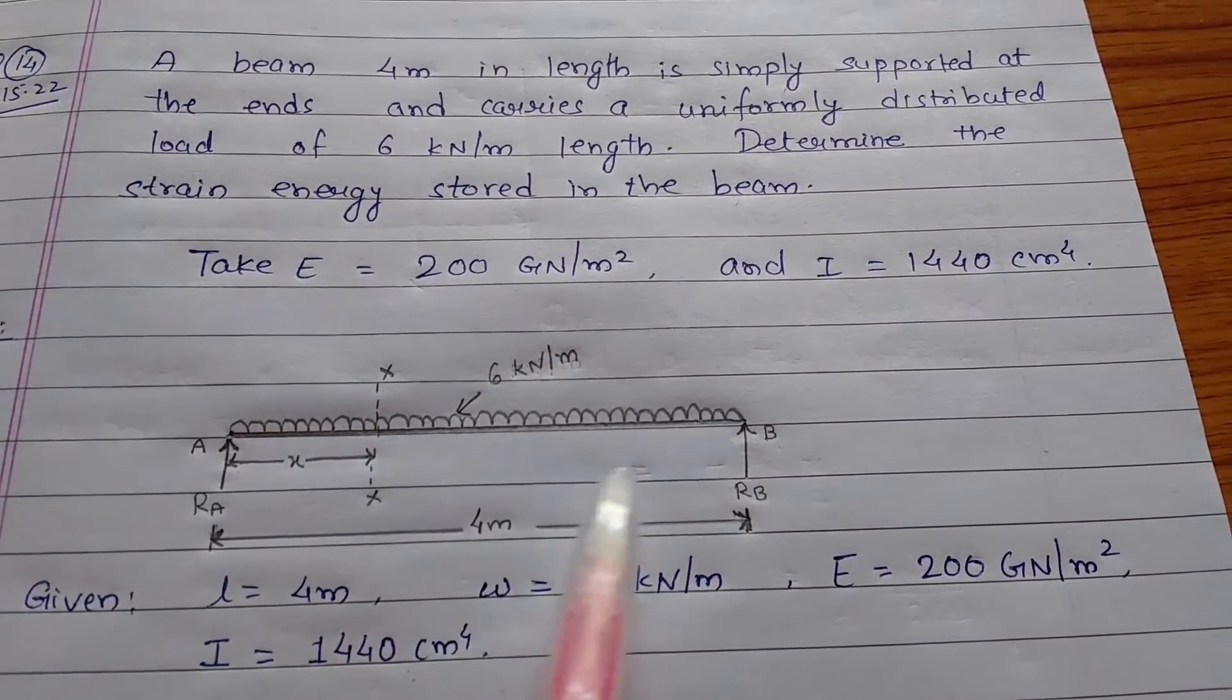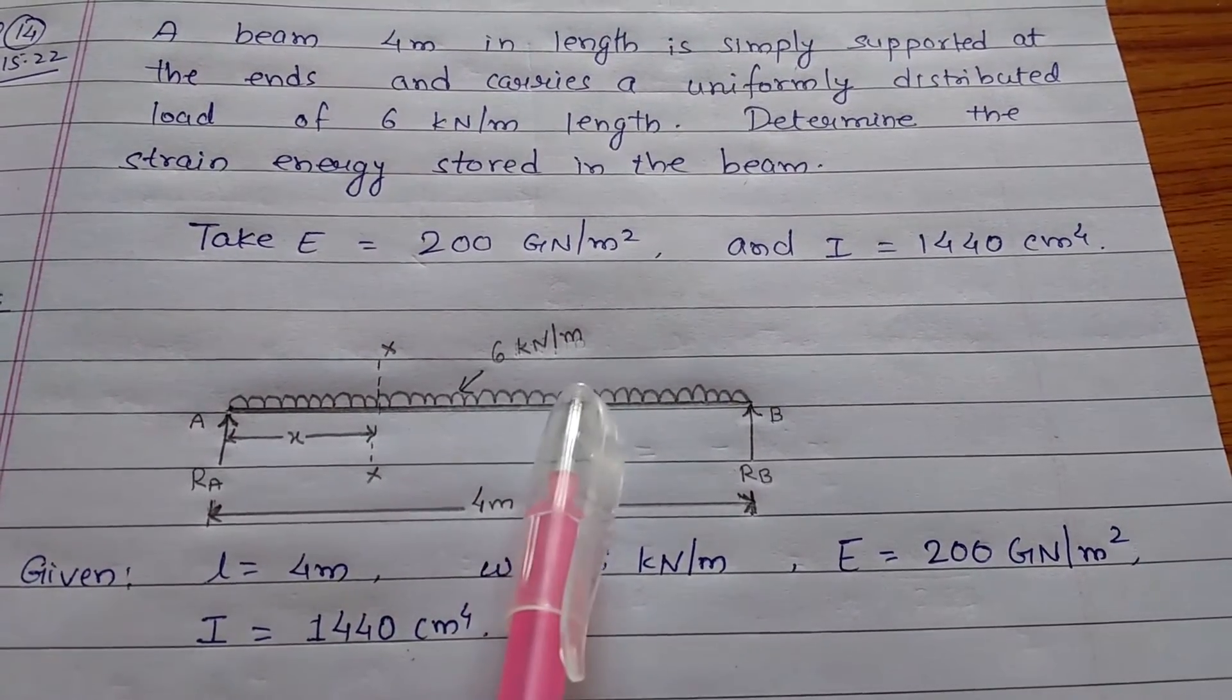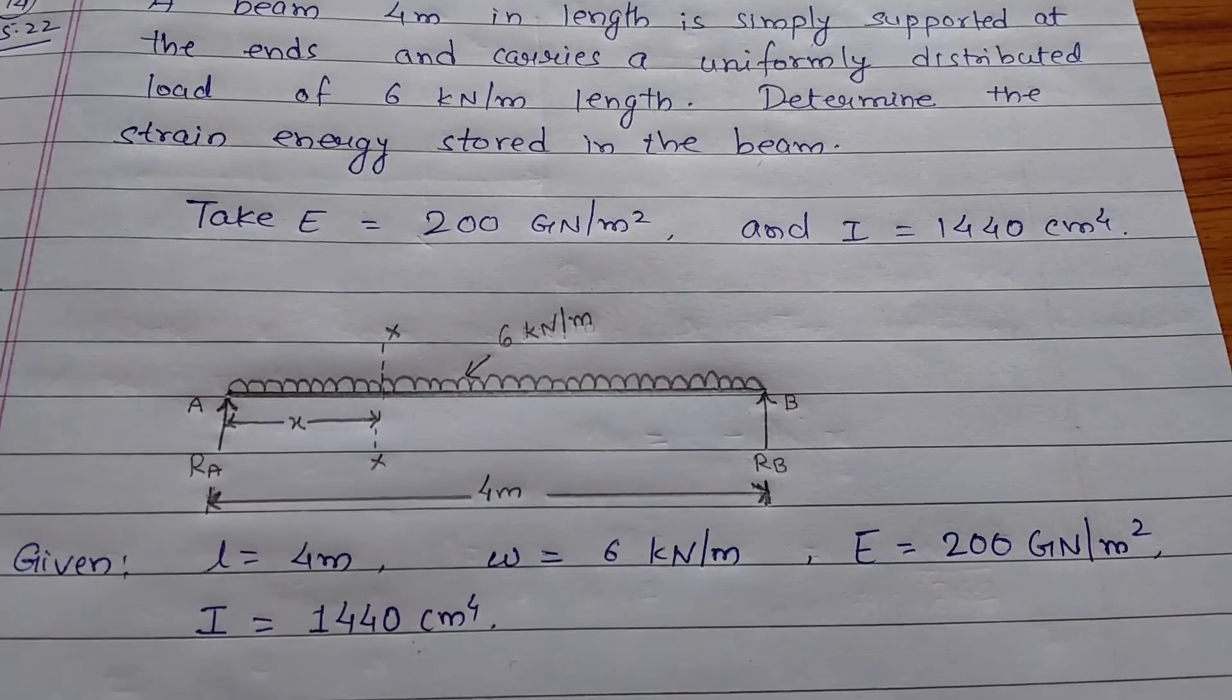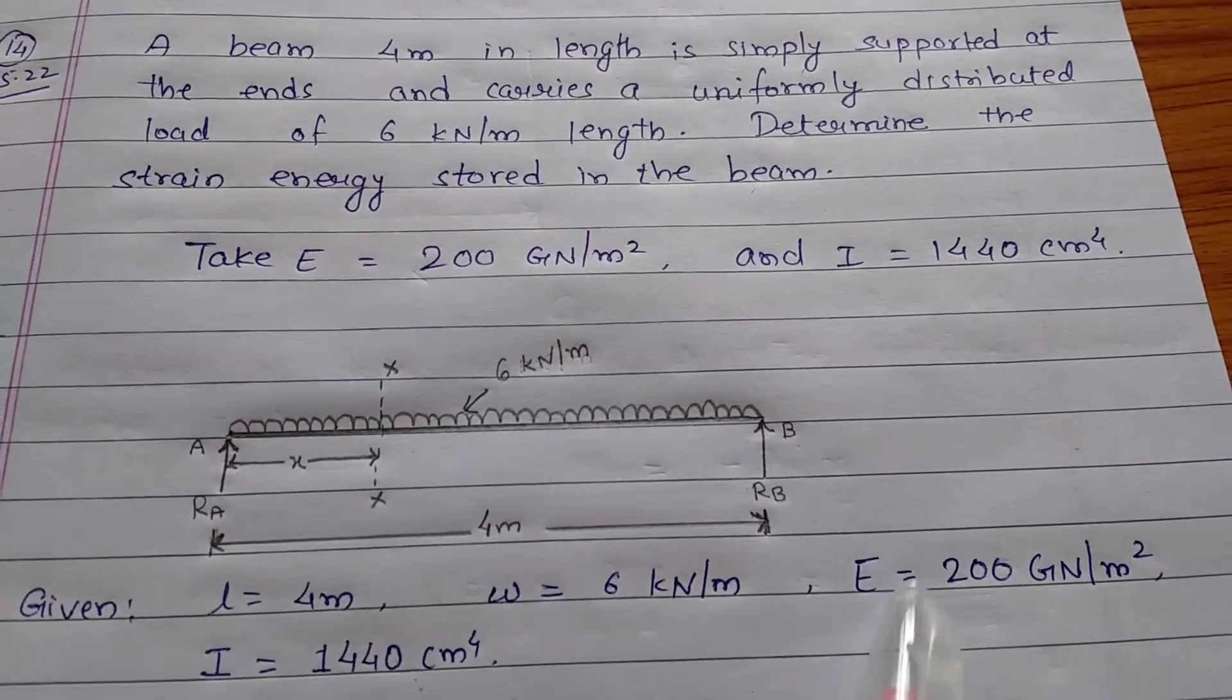And it carries a uniformly distributed load. The value of this uniformly distributed load is 6 kilonewtons per meter. So, we will first find out the reaction forces, Ra and Rb.